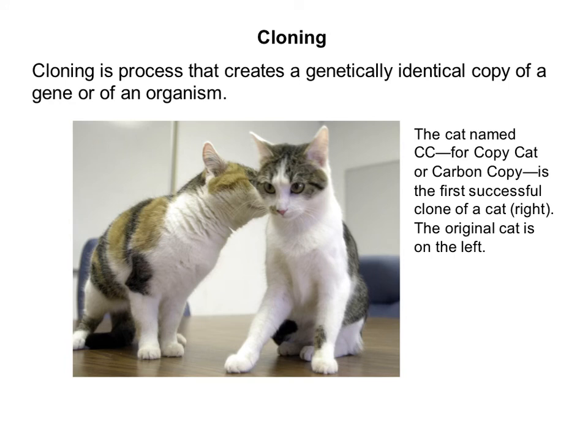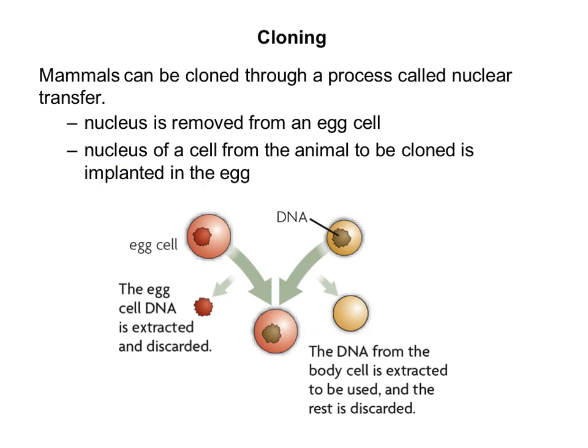Cloning is a process that creates a genetically identical copy of a gene or of an organism. The cat named CeCe — for copycat — is the first successful clone of a cat; the clone is on the right and the original cat is on the left. Mammals can be cloned through a process called nuclear transfer, where the nucleus is removed from an egg cell and the nucleus of a cell from the animal to be cloned is implanted into the egg. Then the egg will divide and, in theory, become a new organism.